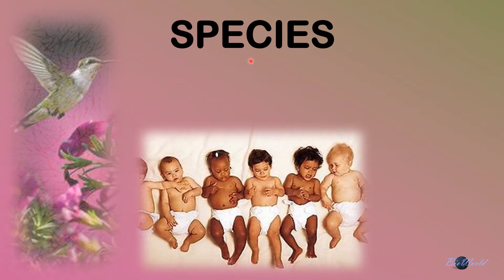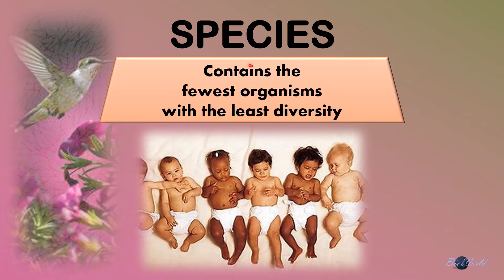In contrast, the taxon of species has the fewest organisms with the least diversity. If we look at the human species, we all look the same in that we have a head, two hands, two legs, two eyes, one nose, one mouth. And if there is to be a difference between these human babies, it is only in their length, maybe their body weight, as well as their skin color. This diversity is called variation.